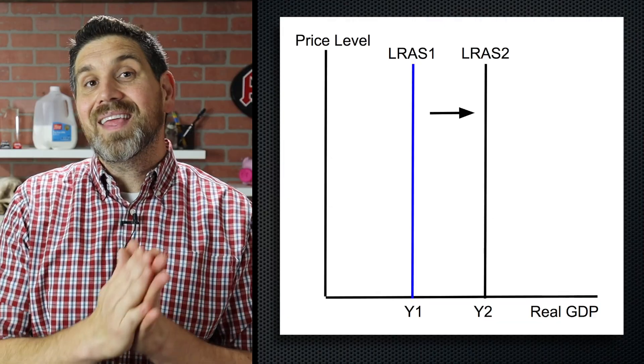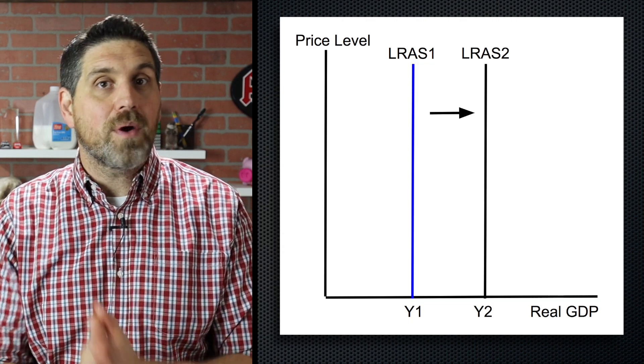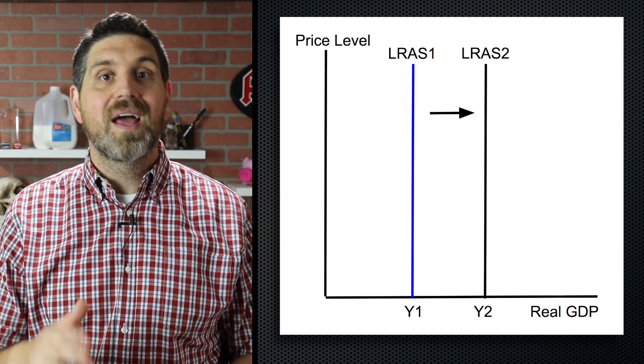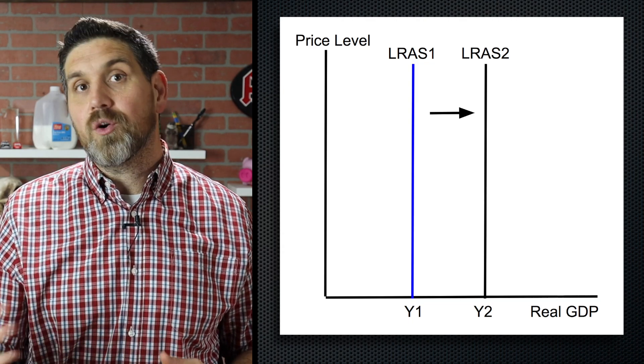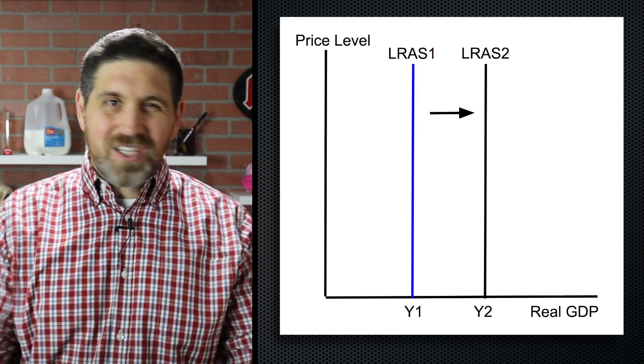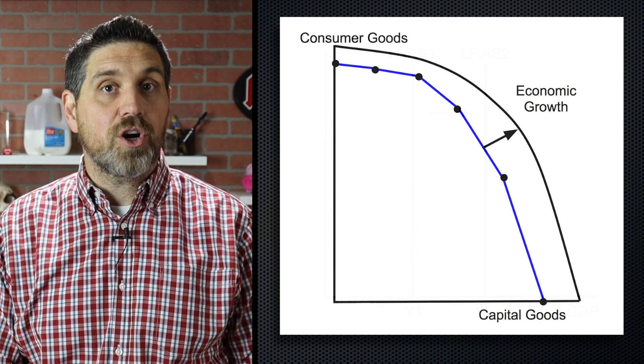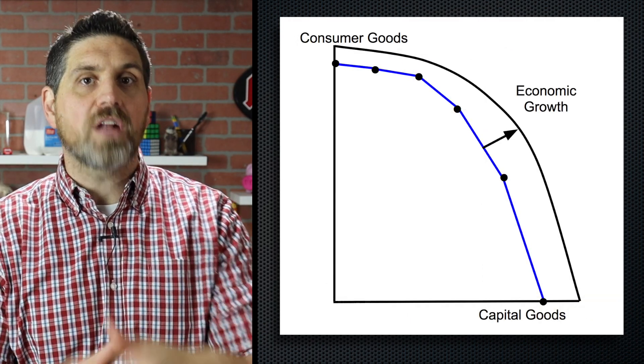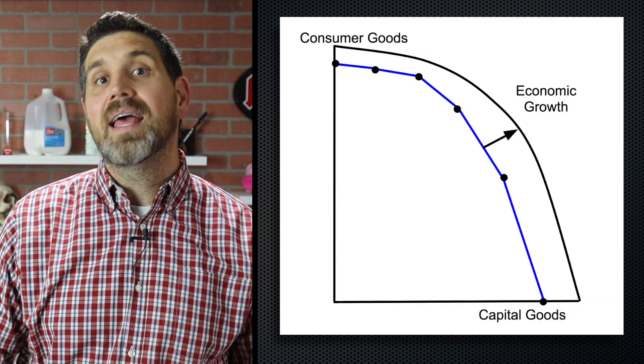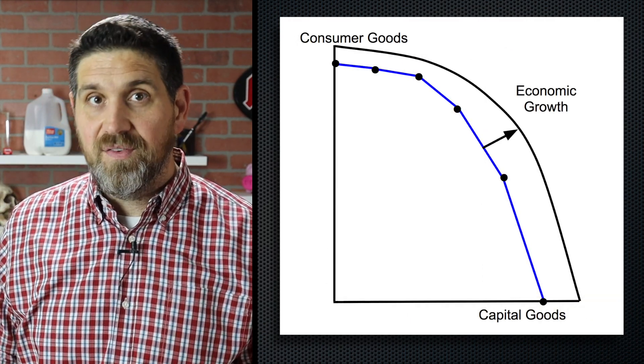But there's one more thing that can happen in the long run. If we have more resources or better resources, the entire long run aggregate supply curve can shift to the right — that means we have economic growth. That's just the same idea as the production possibilities curve shifting outward, and I'll talk more about that in unit five.